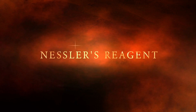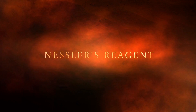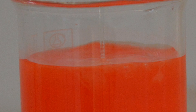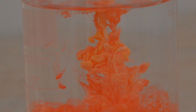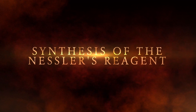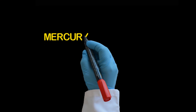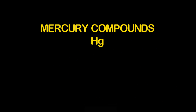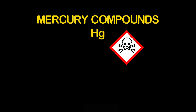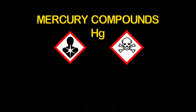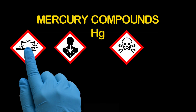Mercury ions are interacting in a peculiar way with iodide ions. The result of their interaction is the so-called Nessler's reagent. Caution is needed when working with the necessary reagents, as mercury compounds are toxic.